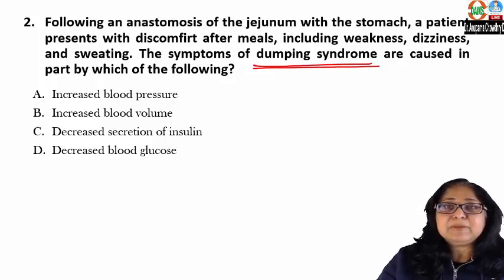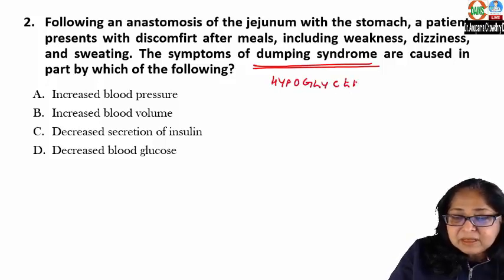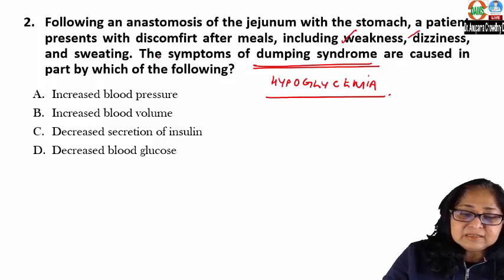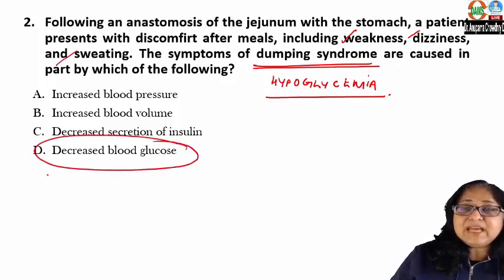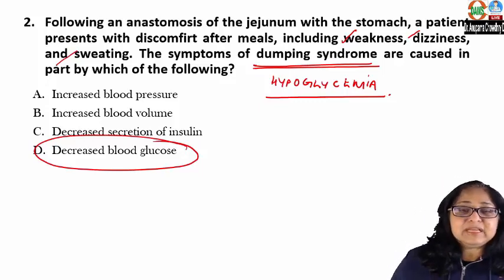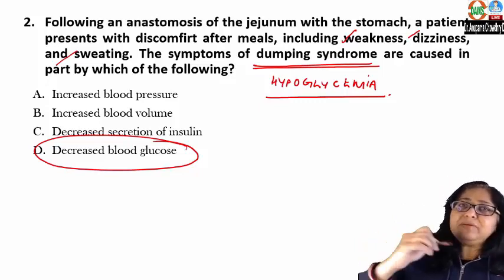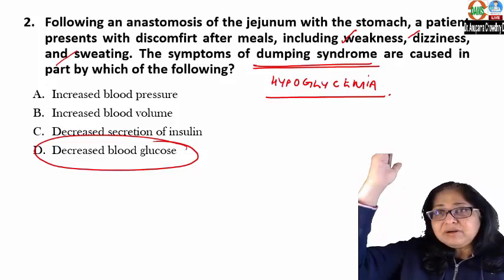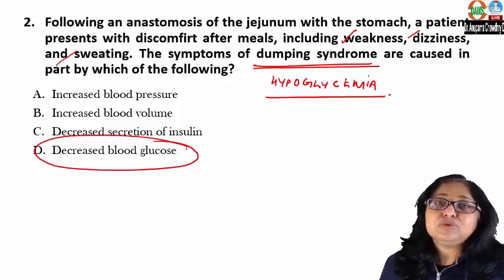The symptoms of dumping syndrome — weakness, dizziness, sweating — are due to hypoglycemia, meaning decreased blood glucose level. What actually happens is that because a portion of the stomach has been removed, there is very rapid movement of the gastric chyme into the small intestine, causing a rapid rise in blood glucose, which triggers a rapid increase in insulin, and therefore a rapid fall resulting in hypoglycemia.